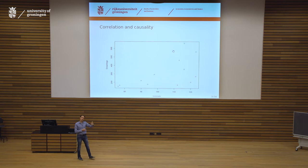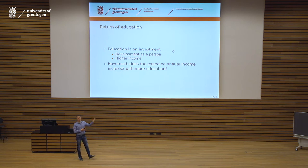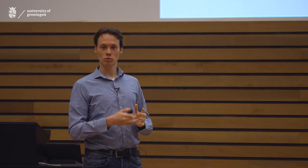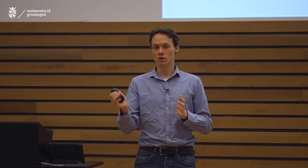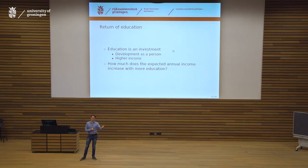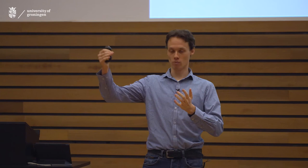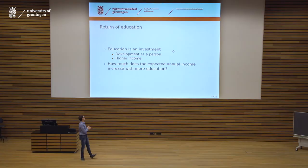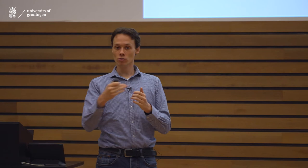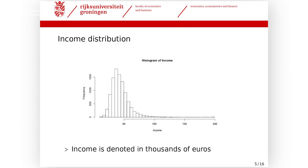This is the central problem in the question we discuss today: the return of education. It's actually a classic problem in econometrics that has been studied for decades. You're deciding whether to go to university. Part of it is personal development — very important — but another factor is that it leads to increased income. You could start working now, but by postponing you expect a return in the future. Our main question: how much does expected annual income increase with more years of schooling?